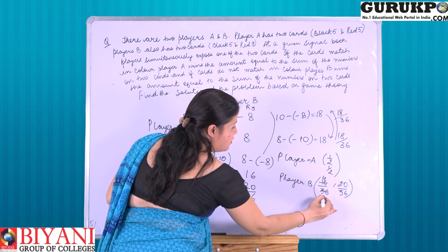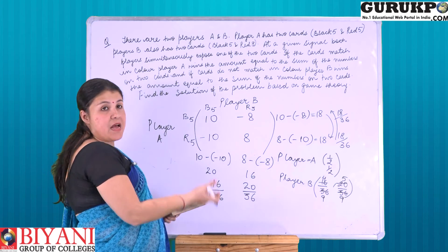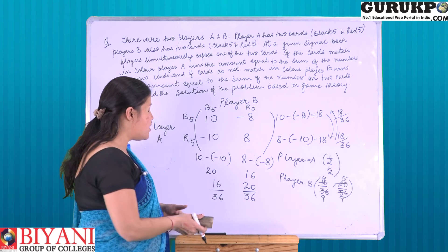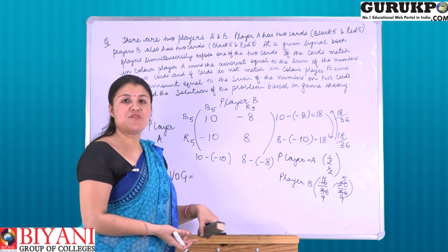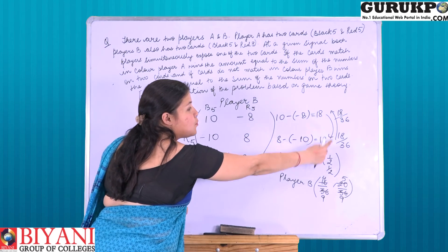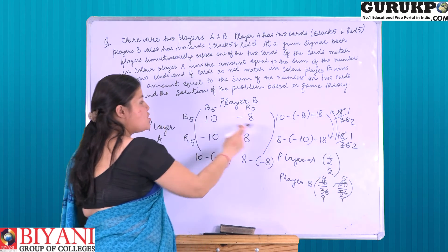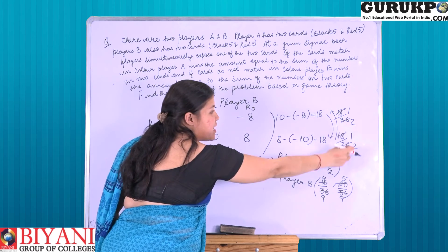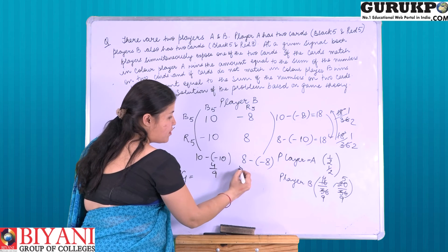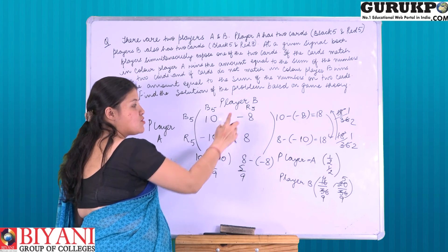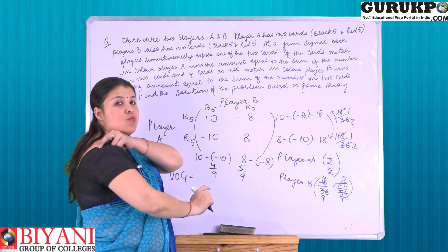The strategies derived are 4/9 and 5/9 for the respective players. After deriving the strategies, we calculate the value of the game. We can calculate the value of the game using any of the four techniques — for example, by multiplying the strategy 4/9 into 10 or 5/9 into 8, or by cross-multiplying the strategies.